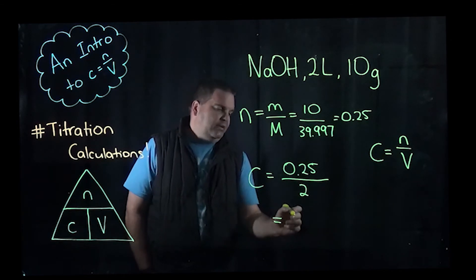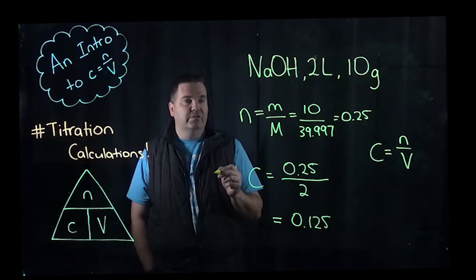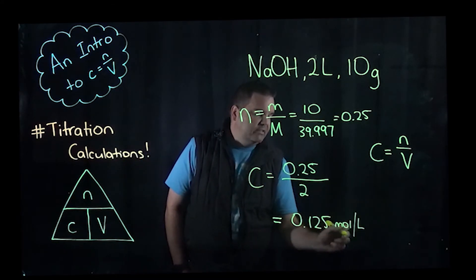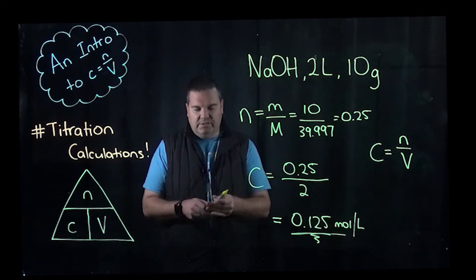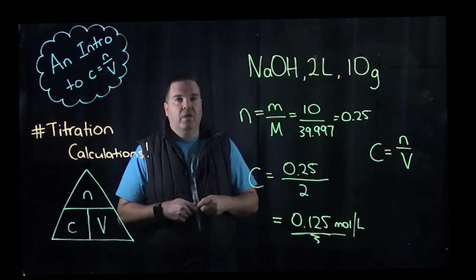And if you do that, you get a value of 0.125 and you must remember your units. This is concentration, so it's in moles per litre. So there's our answer there. So it's fairly straightforward to calculate concentration. You just need to work out number of moles if it's not given to you already and divide it by volume.